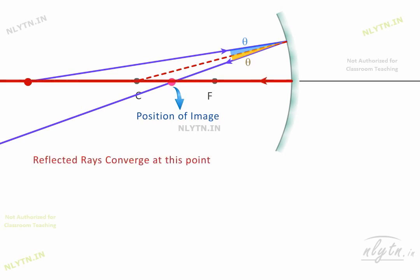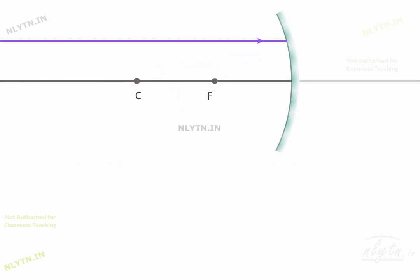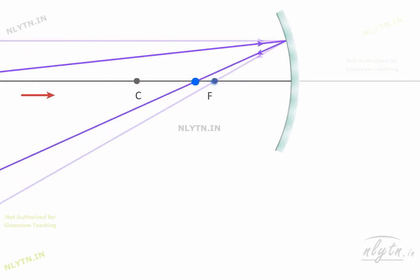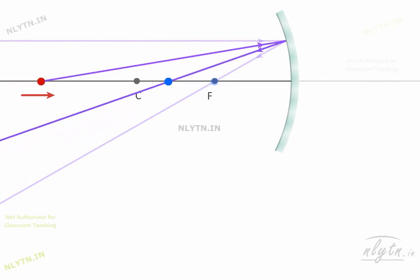And as the rays actually meet at this point, this is a real image. Now, the point to note is that if the object is at infinity, then we can consider the rays coming from it to be almost parallel and close to the principal axis. And the reflected rays will converge at the focus, and thus the image is formed at focus. As the object moves towards the center of curvature, the angle of incidence and thus the angle of reflection will decrease. And thus, the image also moves towards the center of curvature.